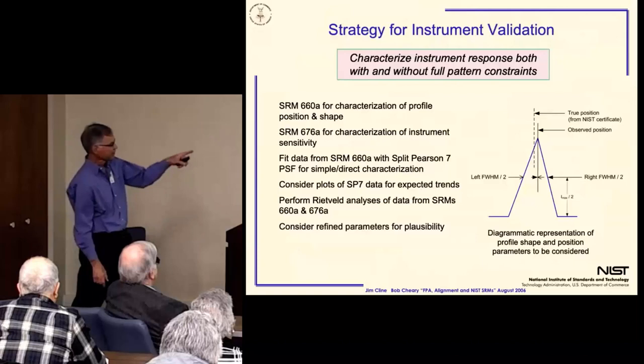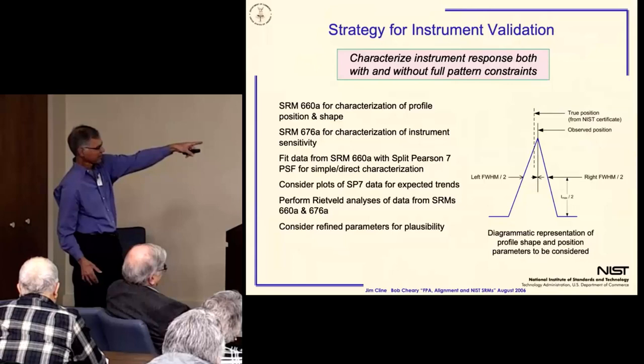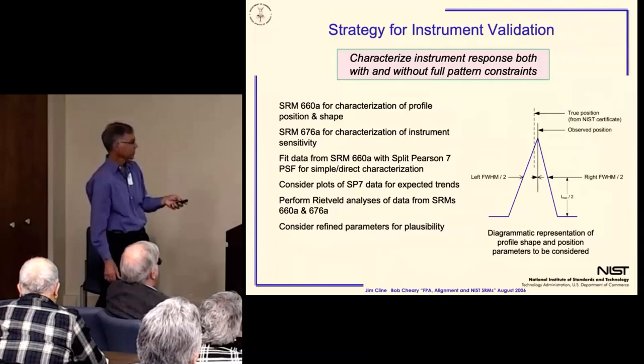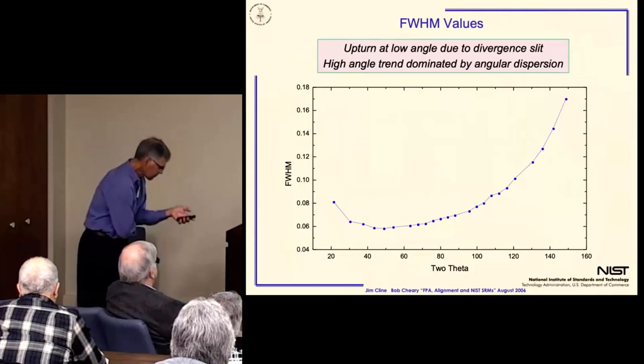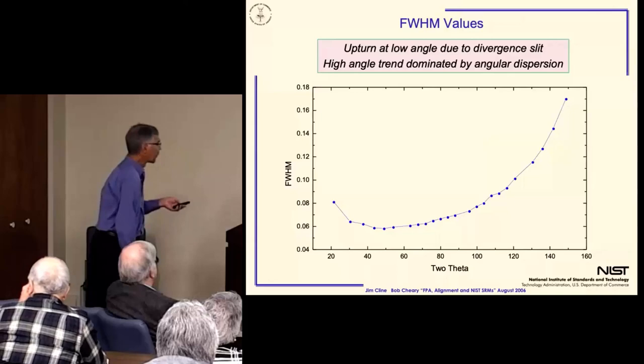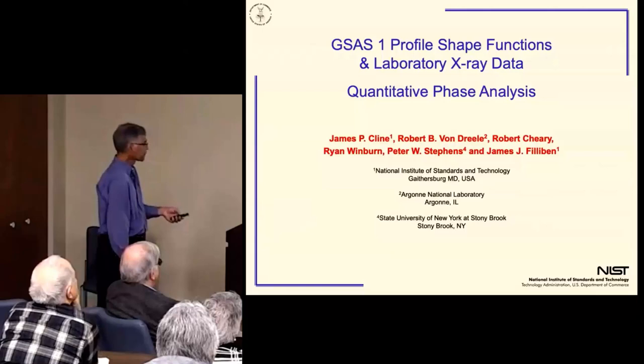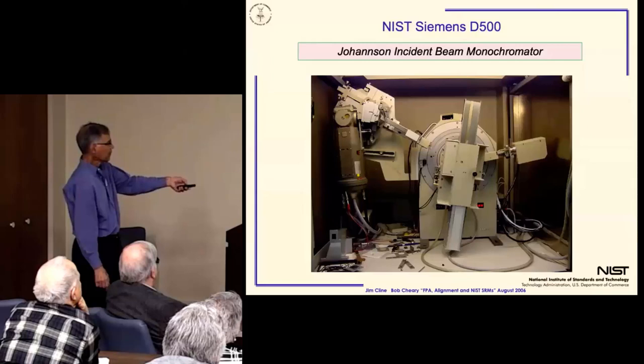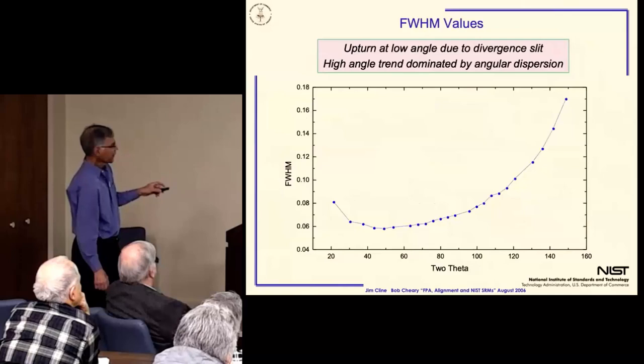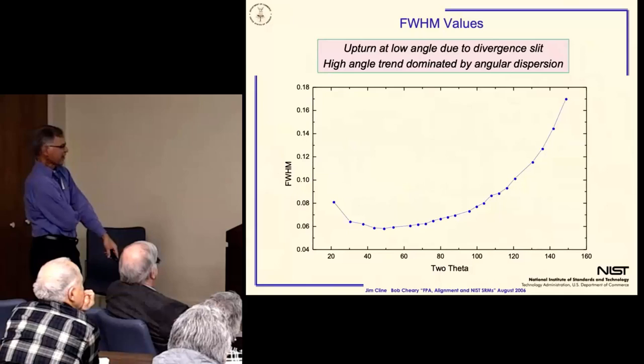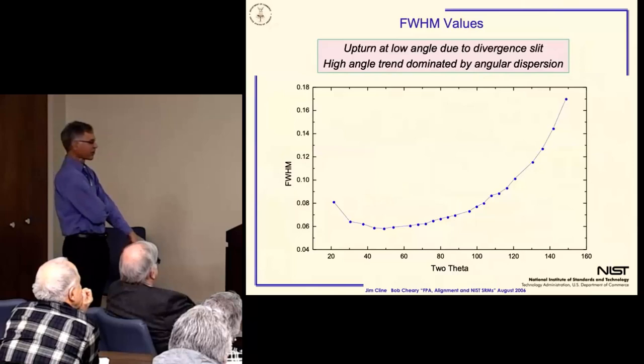These are the empirical ways that we do this. When I qualify an instrument, I start out with simply profile fitting and considering these metrics here. So this is the full width half max of your basic lab machine. The high angle broadening is due to angular dispersion, not at all surprising. The low angle is due to the incident beam slit, the flat specimen error.